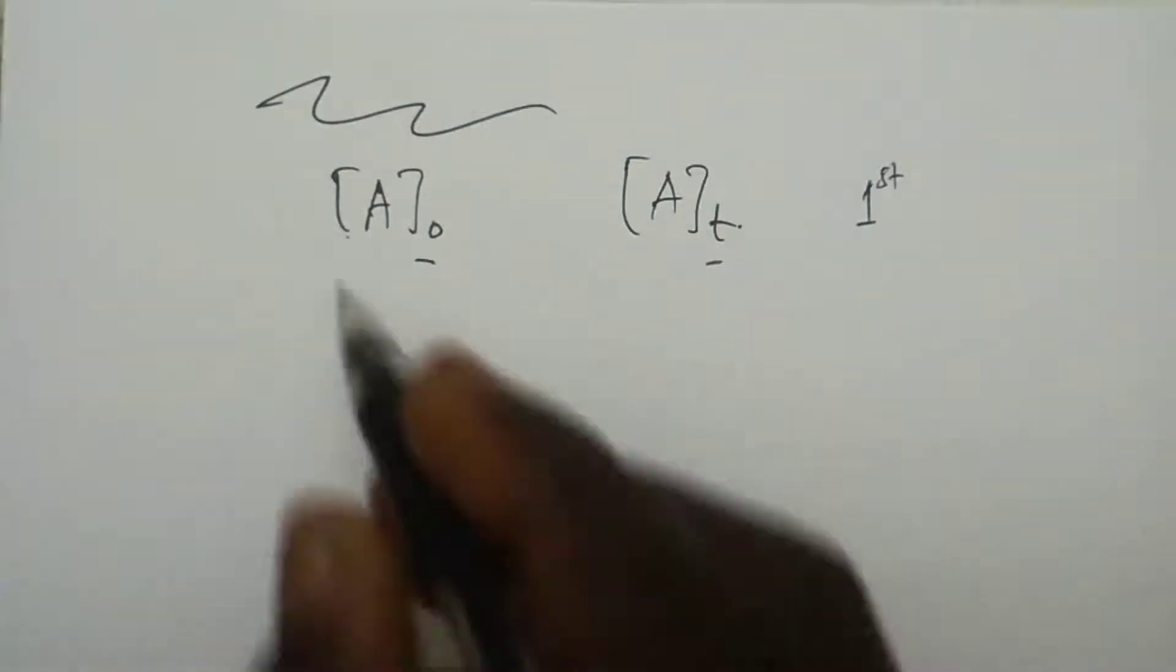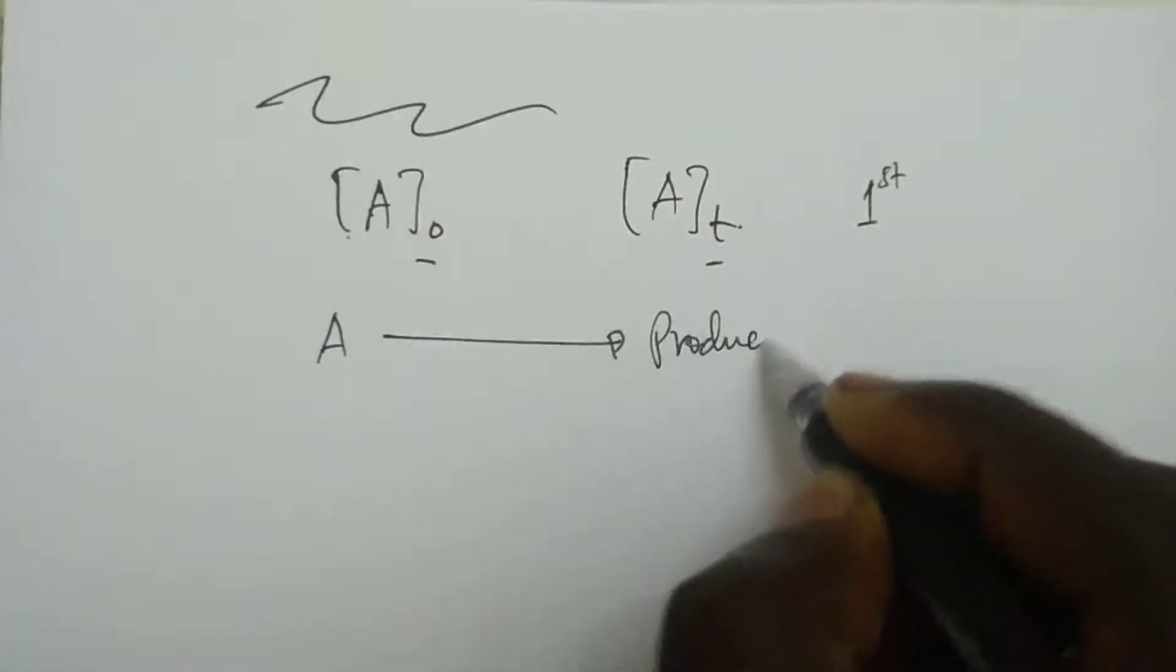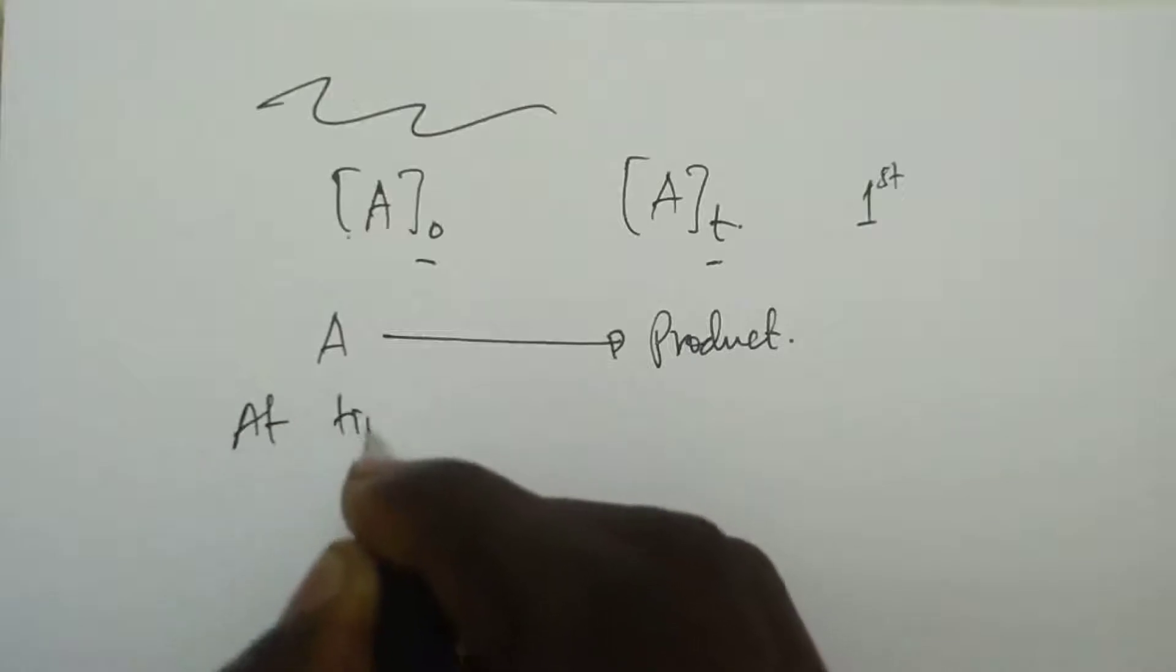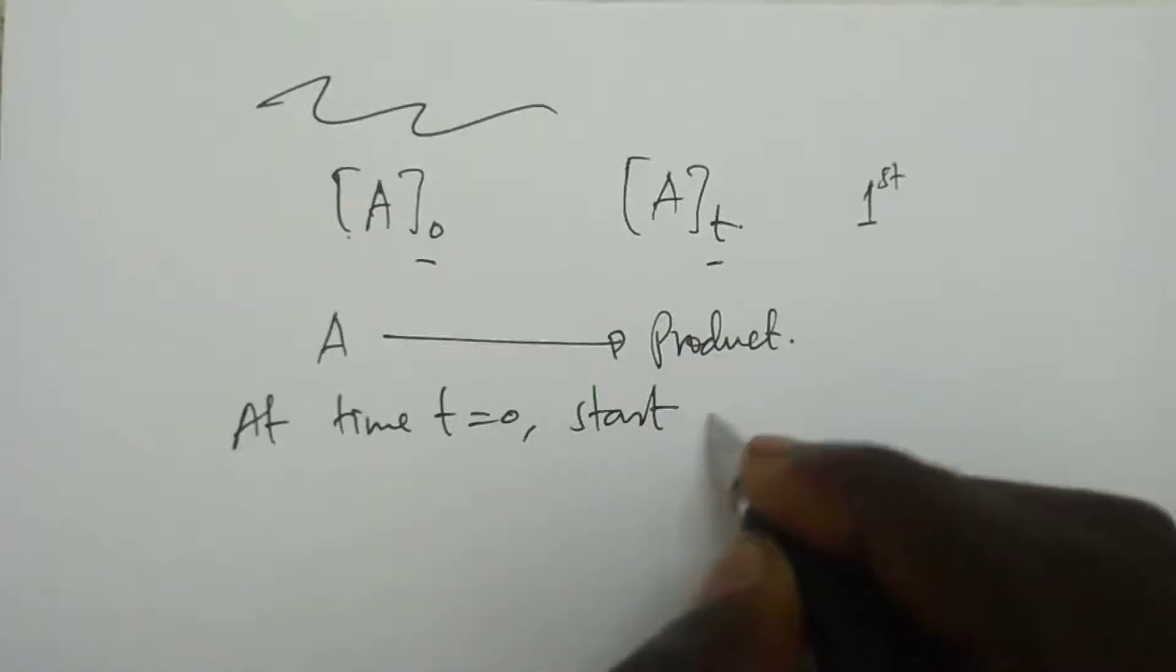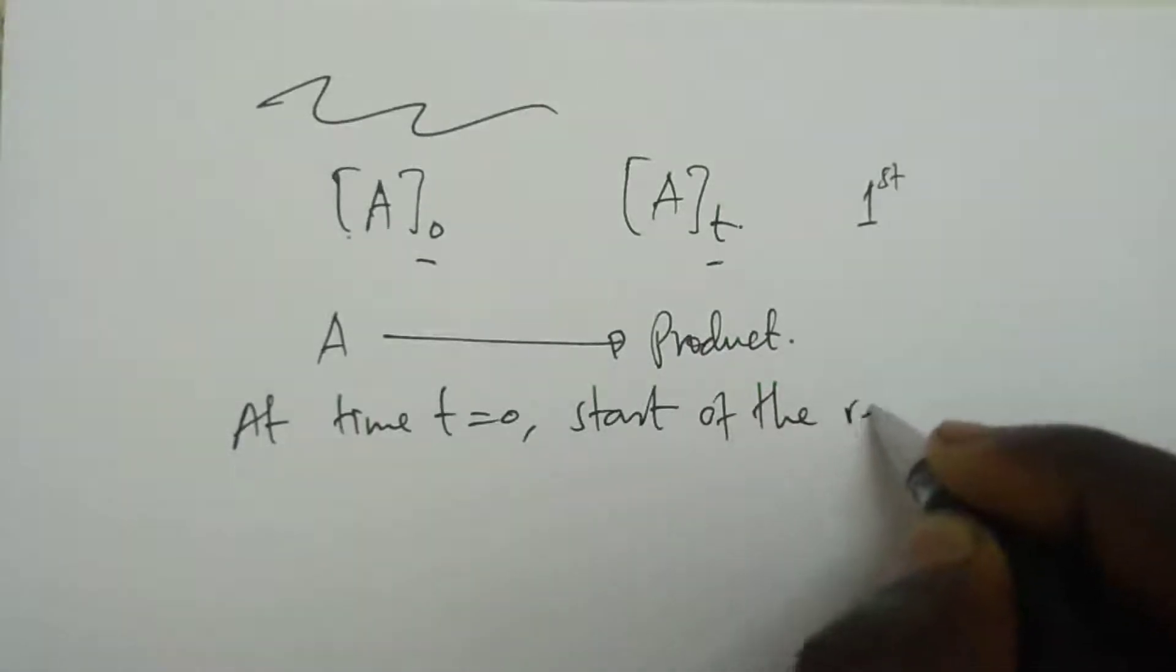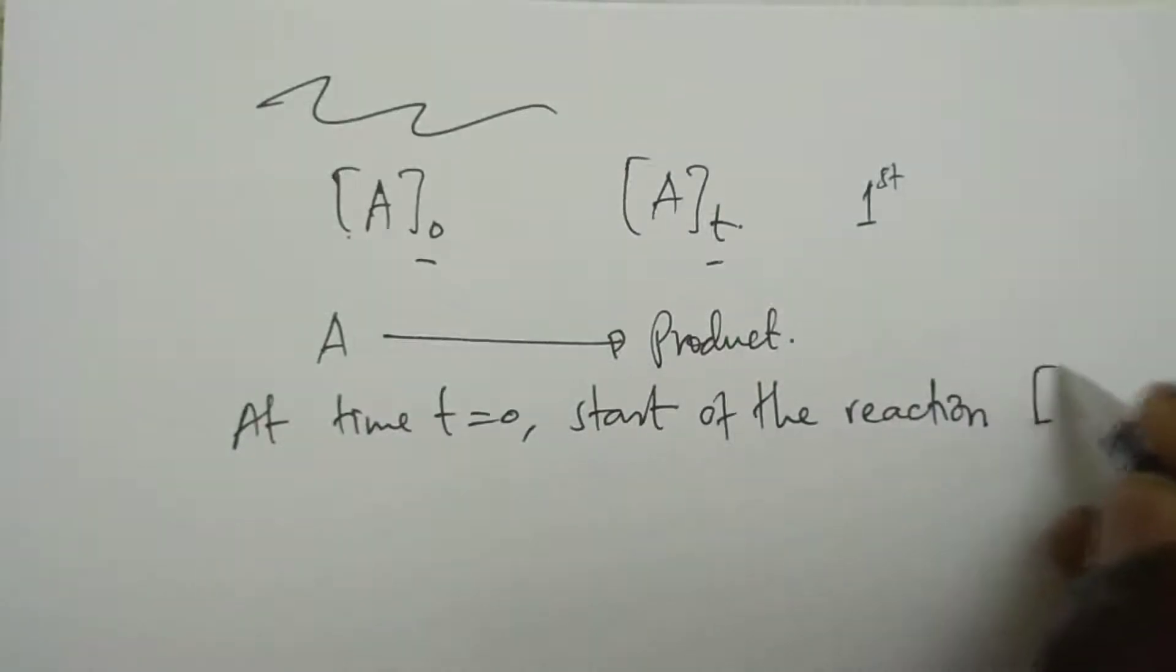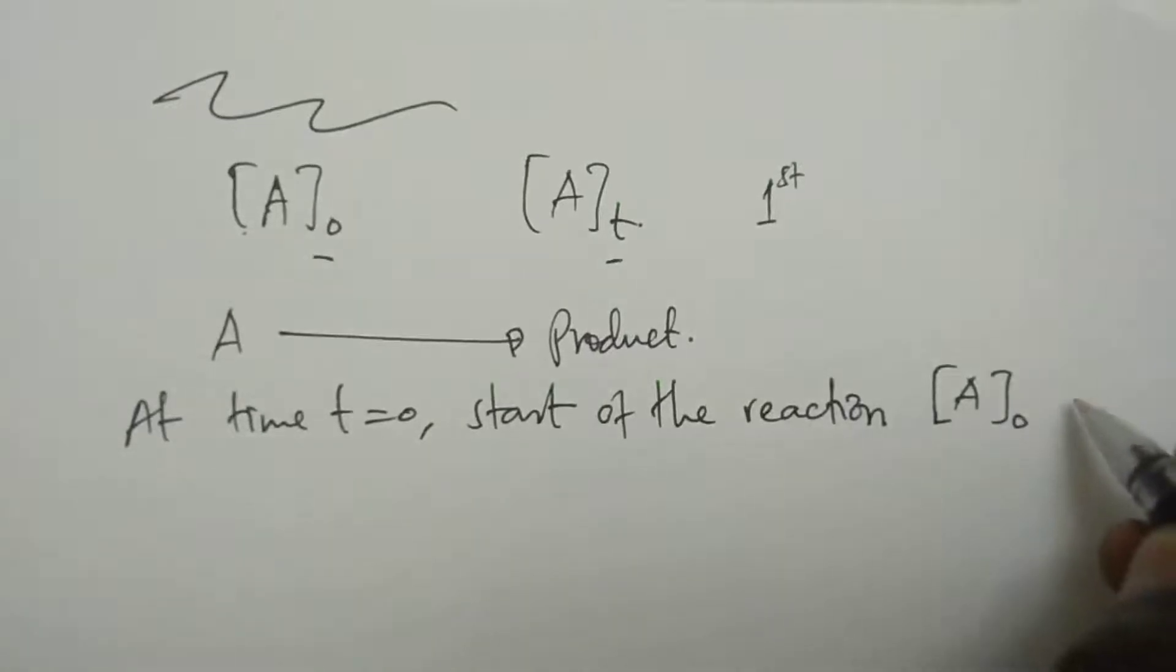Consider a reaction where reactant A reacts to form a product. At time t equals zero, that means the start of the reaction, there is a concentration which we call concentration A₀. Let us assume this concentration to be maybe 2M.